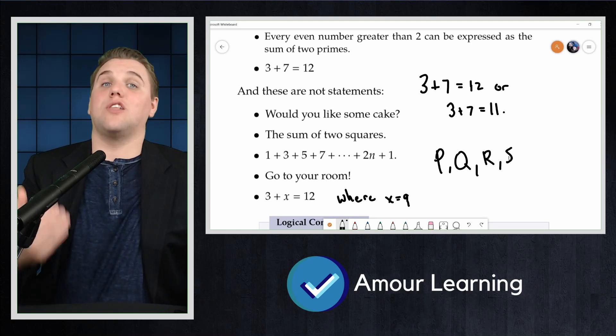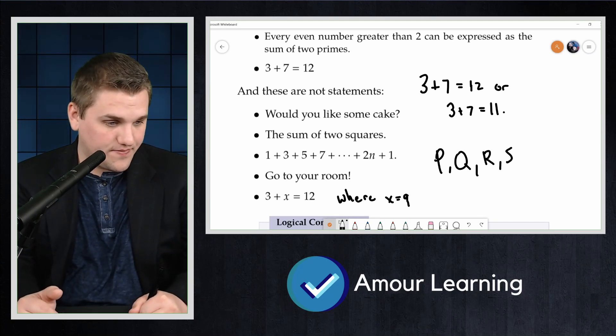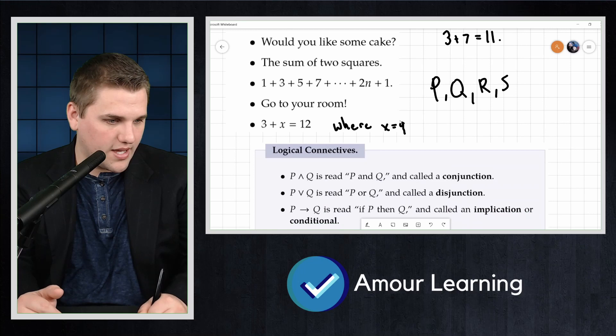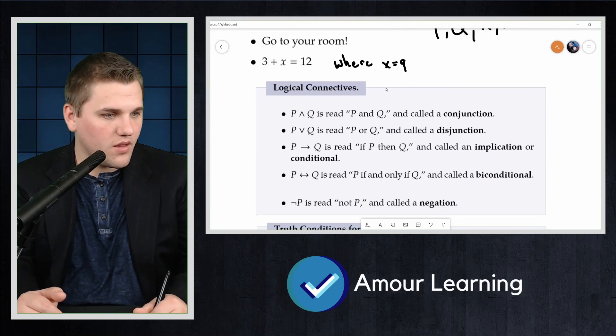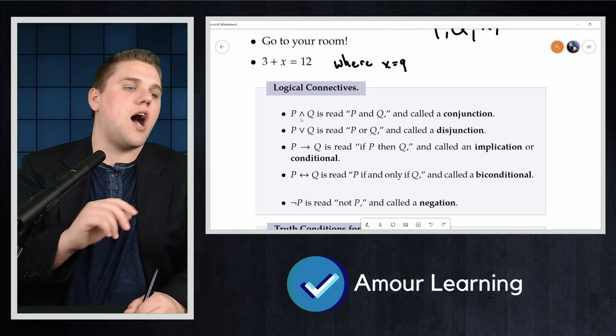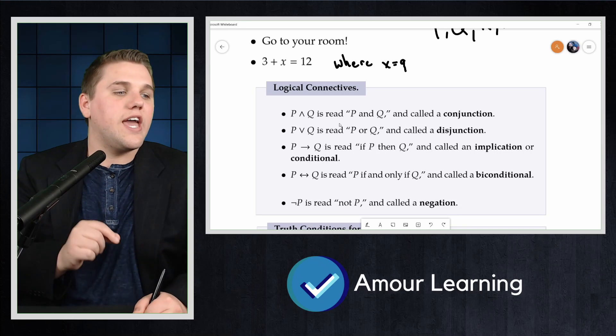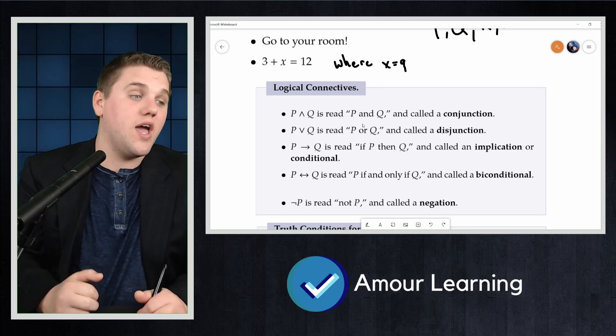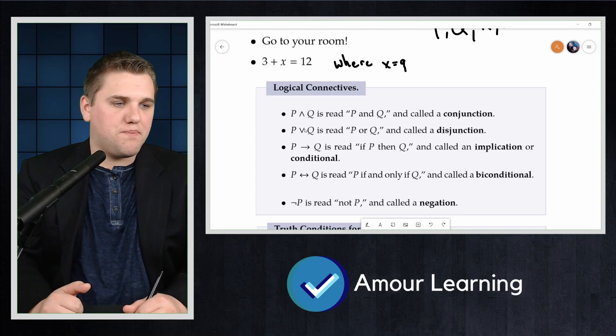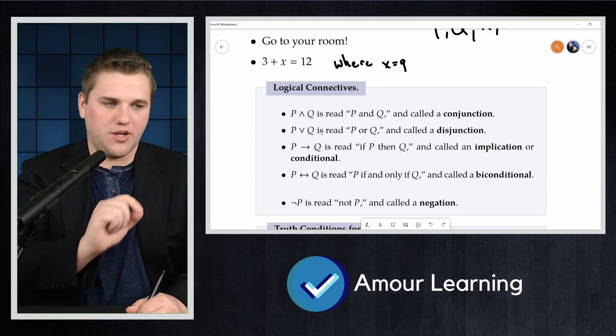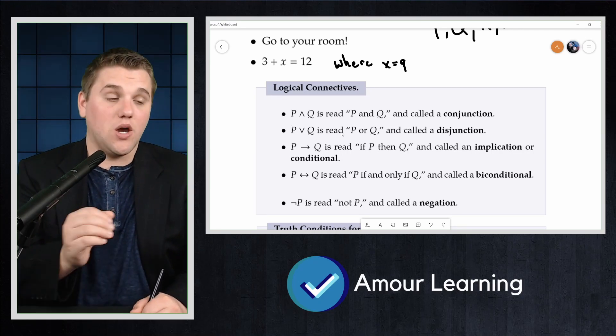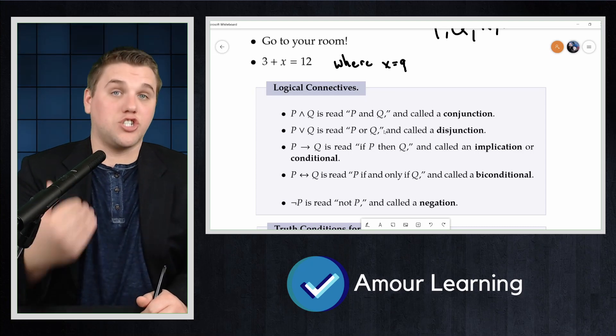We also have symbols for the logical connectives. Let me show you what those look like. Here we have P with an upper arrow here, Q, is read P and Q and called a conjunction. P with the upside down symbol here, Q is read P or Q and called a disjunction.